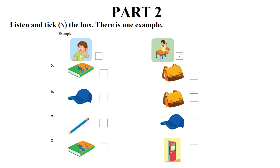5. It's a bag. It's a bag. It's a cap. It's a cap. 7. This is a pencil. 8. This is my book.